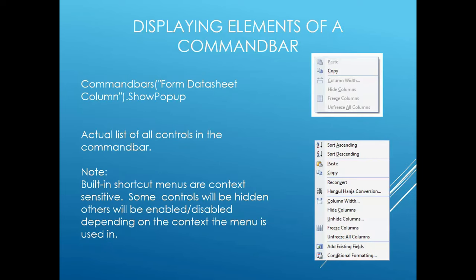Shortcut menus are context sensitive. Depending on what you're doing in Access, certain elements of the set of controls in that shortcut menu may be visible, hidden, or disabled. You can see most of the controls that are visible using the showPopup method of the command bars collection, but that will not necessarily display all of the options if some of them are not visible by default.